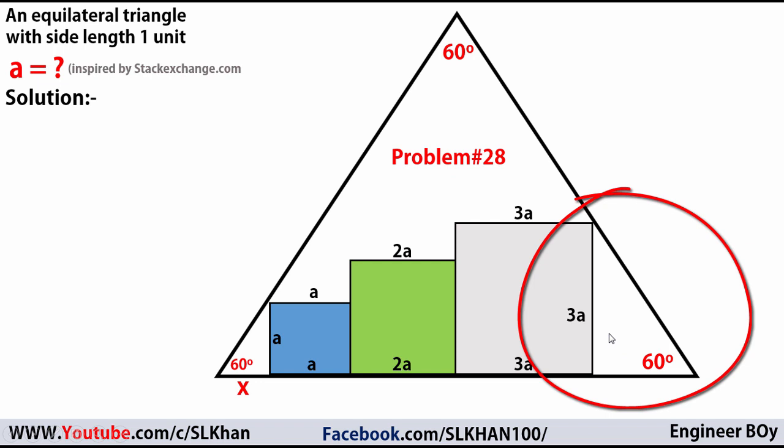These both triangles are similar by angle-angle-angle because both triangles have 60 and 90 degrees, and the remaining angles are also the same. So these are similar triangles. If the base of this small triangle is x, which is related to a or 1a, and here we have 3a, that means the base of this triangle must be 3x.